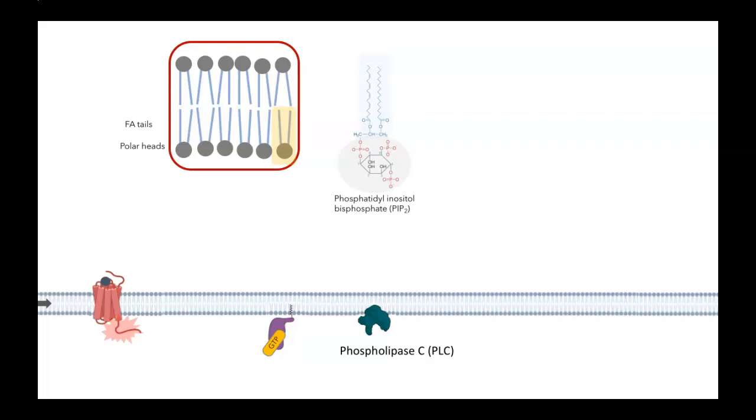This is the substrate for phospholipase C. If it's activated, it's going to take this molecule and clip it into two pieces: inositol triphosphate, which is going to be polar, and then diacylglycerol, which is nonpolar and will remain in the membrane.